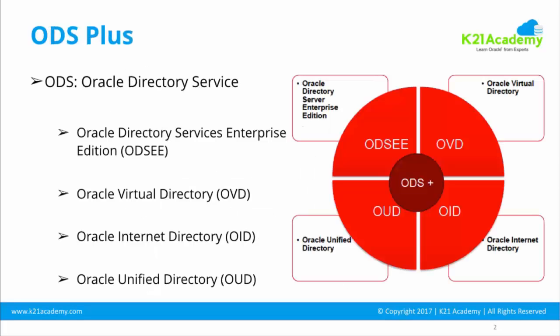Oracle Directory Service Enterprise Edition, Oracle Internet Directory, and Oracle Unified Directory are all LDAP servers. Oracle's recommendation for any new or large-scale implementation is Oracle Unified Directory. Oracle Virtual Directory complements OUD, and OUD also supports replication and proxy configurations. So for any new implementation, Oracle Unified Directory should be your LDAP server of choice.